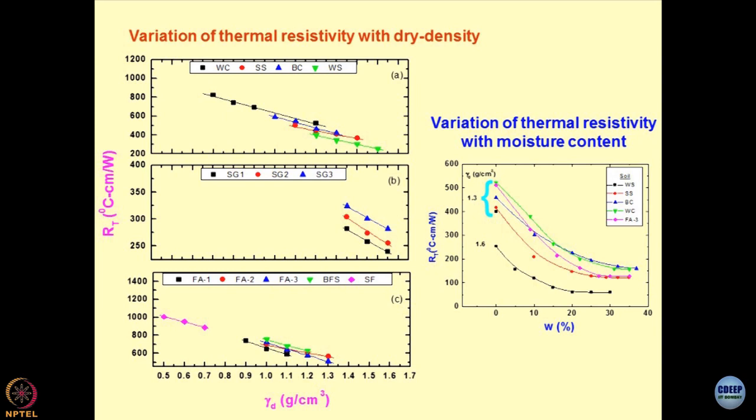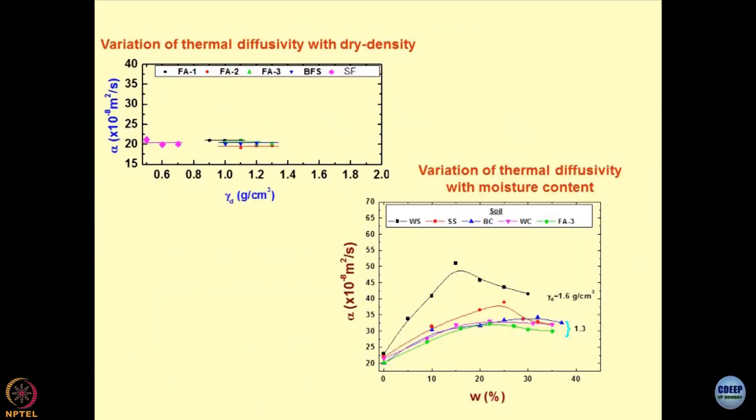These things are quite easily understandable and they can be used for designing various thermoactive structures. If you plot the thermal diffusivity as a function of gamma D, what we observed is that this remains unaltered, there is no influence of unit weight on the thermal diffusivity. Similarly, if you plot thermal diffusivity with respect to moisture content, we observed some changes and this is where the effect of gamma D gets translated. A denser system will show higher diffusivity as compared to a lighter system. This is quite understandable.